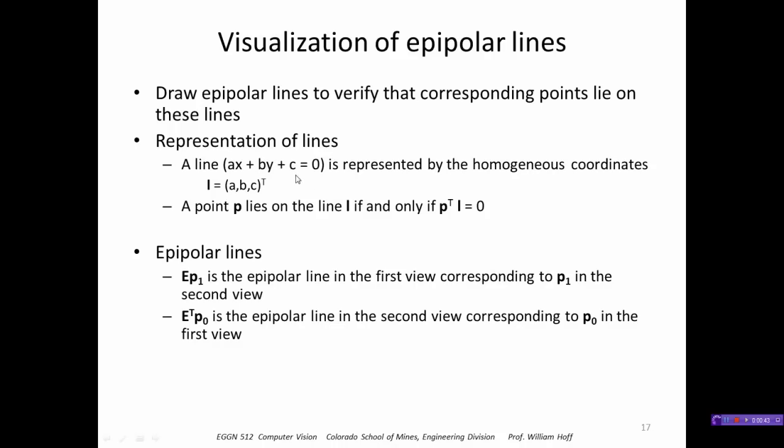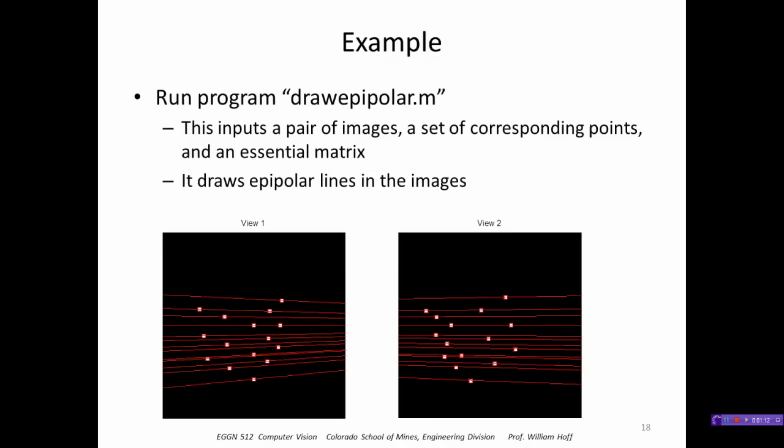We can draw epipolar lines, we can represent them using this form ax plus by plus c equals zero. If we do that then a point lies on line l only if p transpose l equals zero. So we can multiply e times p1 to calculate the epipolar line in the other view, or e transpose times p0 to get the epipolar line in the second image. Let me just run draw epipolar. This program inputs the images, the essential matrix that we calculated earlier, and the set of corresponding points and it draws the epipolar lines.